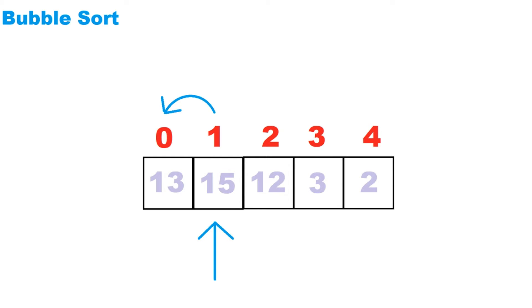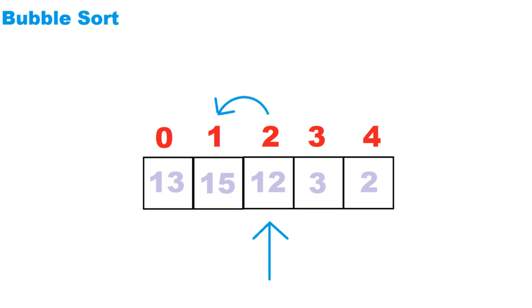In this case, 15 is not less than 13, so we move on to the next cell. Now we're on cell two, and it has a value of 12. The cell before it is cell one. It has a value of 15. Because 12 is less than 15, they get swapped.